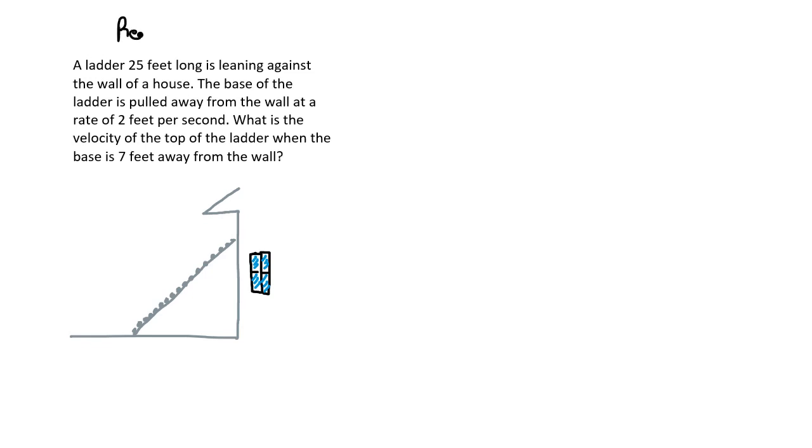Another problem that fits squarely in the category of related rates. This time, a ladder 25 feet long is leaning against the wall of a house. The base of the ladder is pulled away from the wall at a rate of 2 feet per second. What is the velocity of the top of the ladder when the base is 7 feet away from the wall?